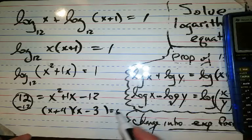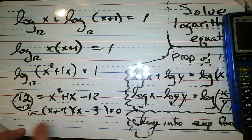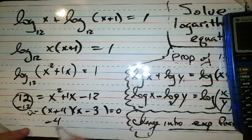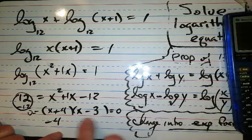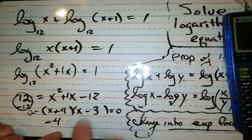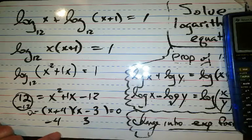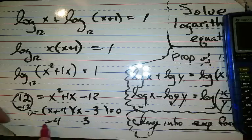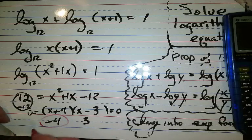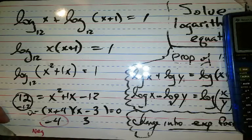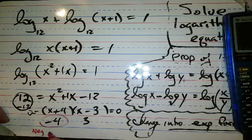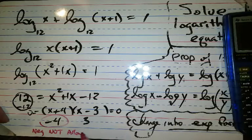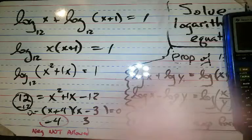So how do I know that I'm done? I have to say what makes this equal 0? Oh, that's negative 4. Negative 4 makes that equal 0. What makes this equal 0? Oh, positive 3 makes that equal 0. Now the deal is, in logarithms, negative answers are not allowed. Negative is not allowed. Not allowed.